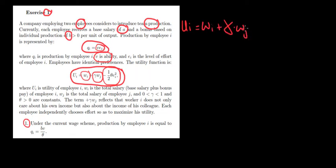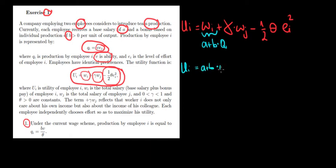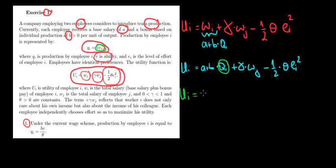We write the utility as: wage plus gamma times the wage of the other individual, minus one over two times theta times effort squared. The wage has a base salary A plus a bonus B times the quantity of the individual. So the utility becomes A plus B times Q plus gamma times the other person's wage, minus one over two times the effort cost. Since Q equals V times E, we substitute to get: A plus B times V times E, plus gamma times the other wage, minus one over two times theta times E squared.